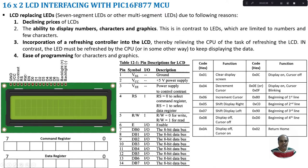Then we have three control lines: RS, RW bar, and enable. RS stands for register select. We have two registers inside the LCD — one is the command register and another is the data register, both are 8-bit registers. The command register is used to hold commands like which row and position to put the character, whether we require a cursor or not, whether the cursor should be off, on, or blinking. Those commands reside in the command register.